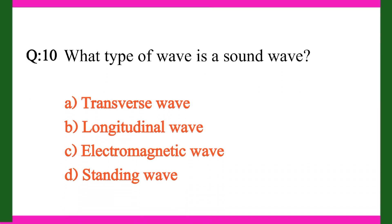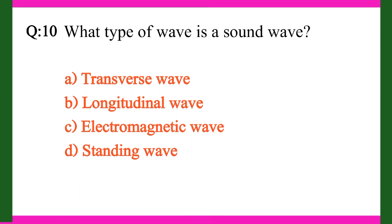Question 10. What type of wave is a sound wave? A. Transverse wave. B. Longitudinal wave. C. Electromagnetic wave. D. Standing wave. Right answer is B. Longitudinal wave.